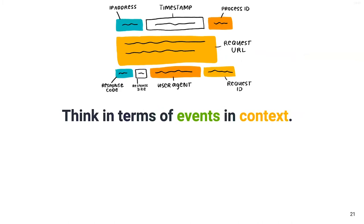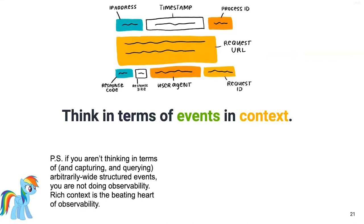When it comes to instrumentation, it's all about the context. It's all about events. These arbitrarily wide structured data blobs are the beating heart of observability — rich context oriented around the perspective of each user. When the request enters the system, you need to capture one wide event per request per service. Metrics won't cut it. Logs won't cut it. You need arbitrarily wide structured data blobs if you're going to have actual observability.